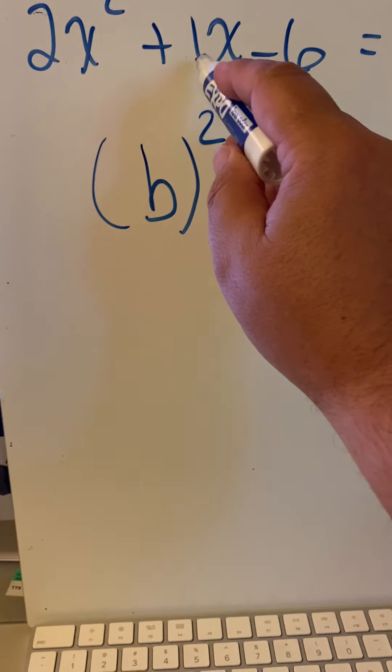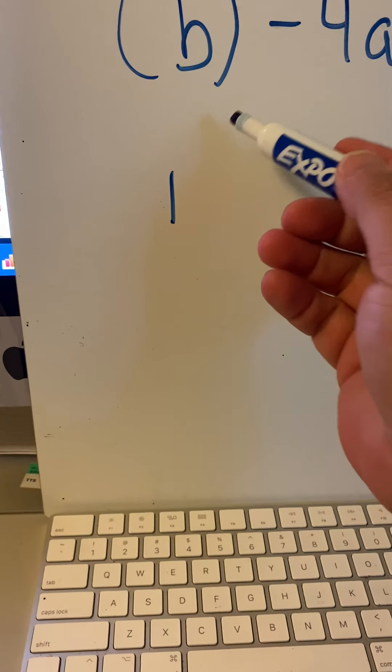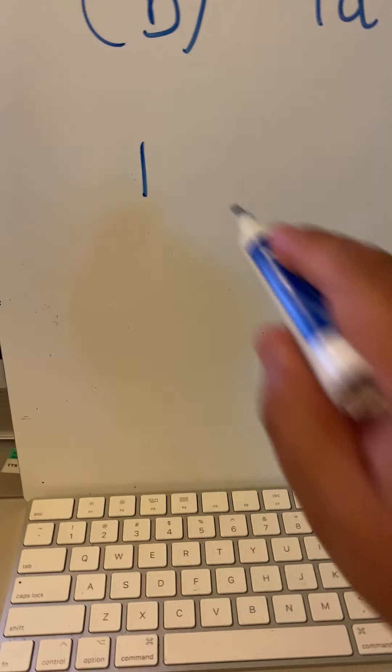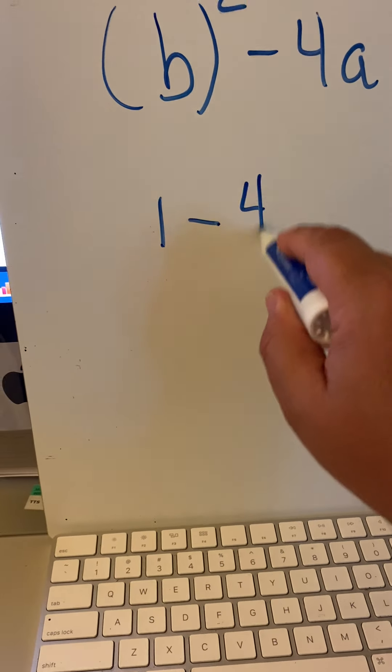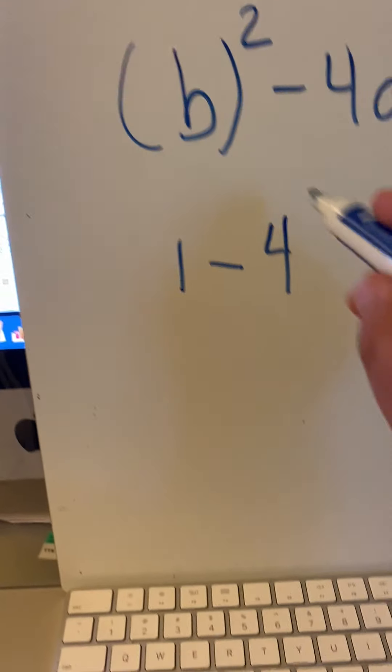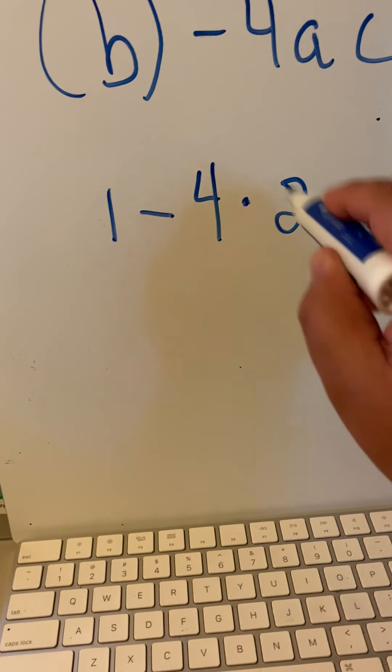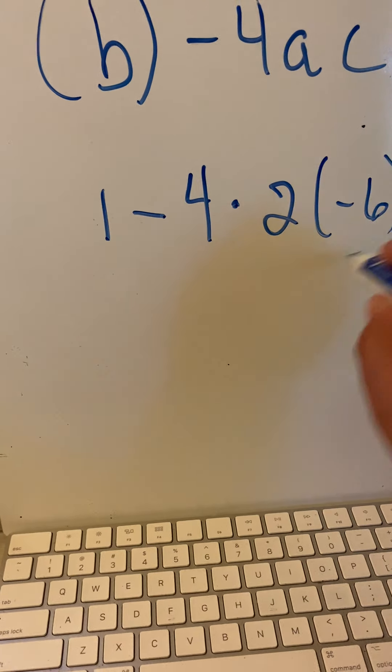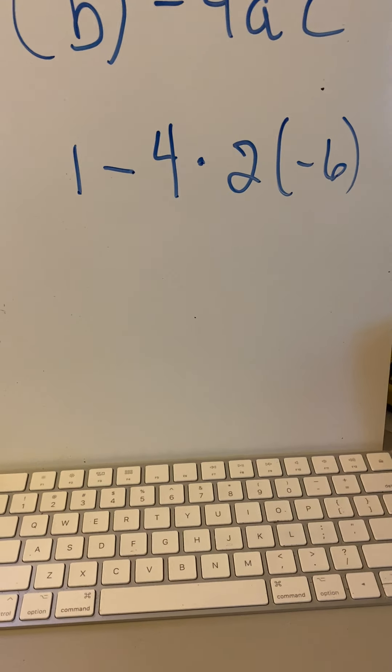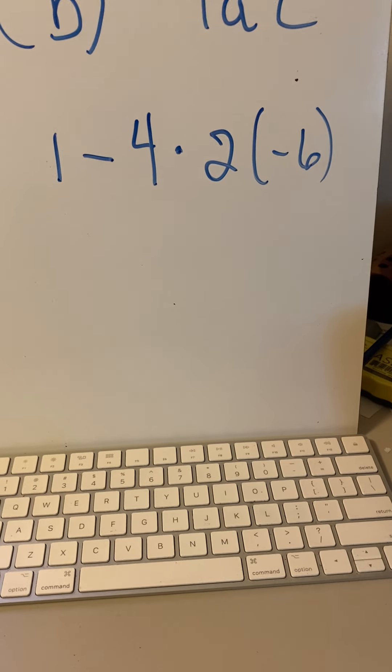b squared. What is b in this problem? It's 1. And what is 1 squared? 1 times 1, 1, minus 4 times a, a is 2, and c, which is negative 6. This is our quadratic discriminant.